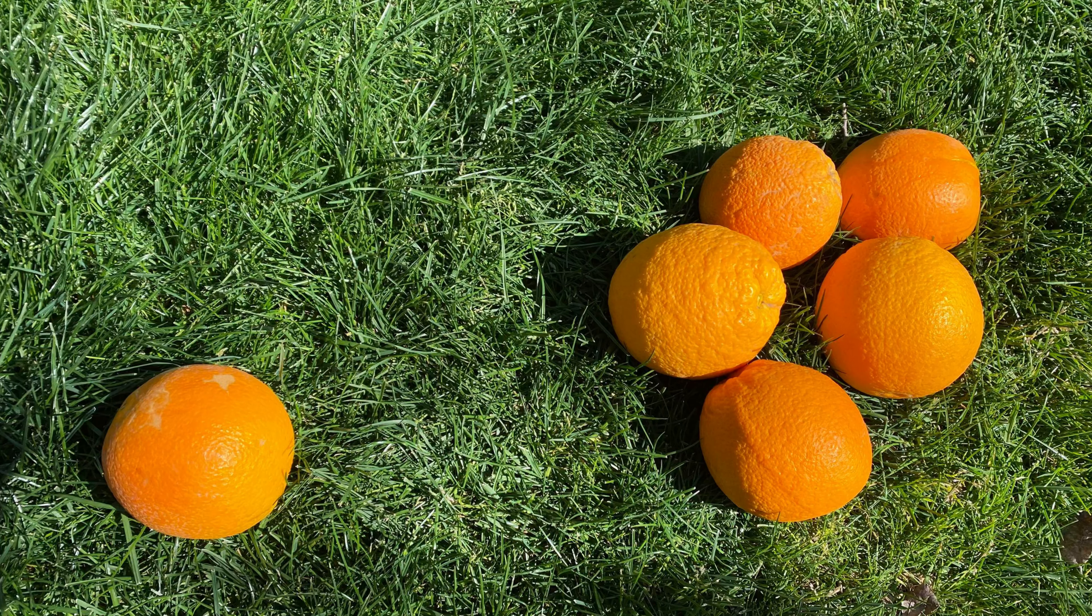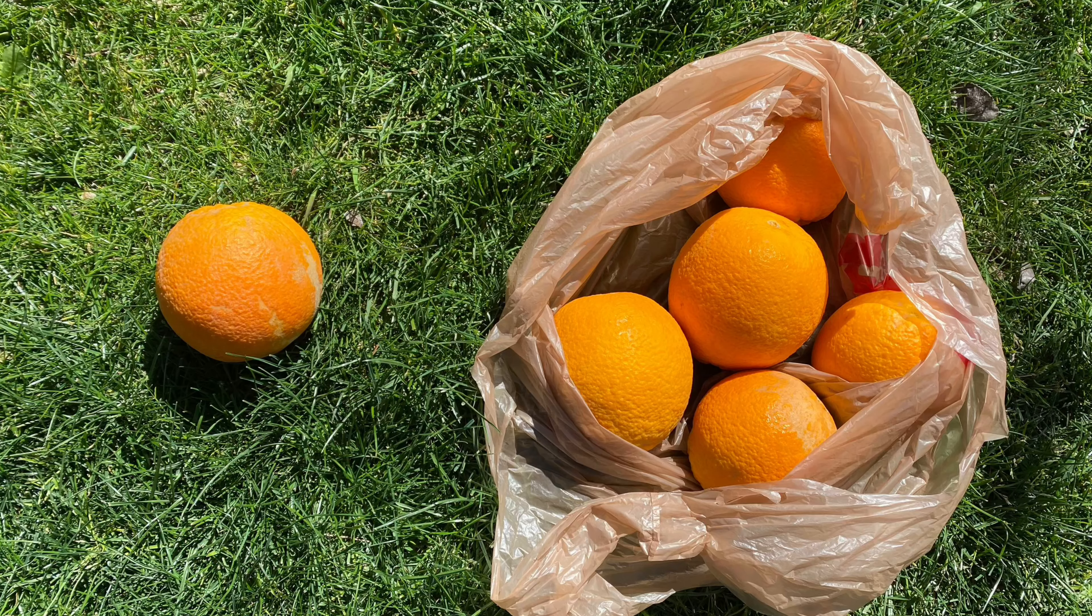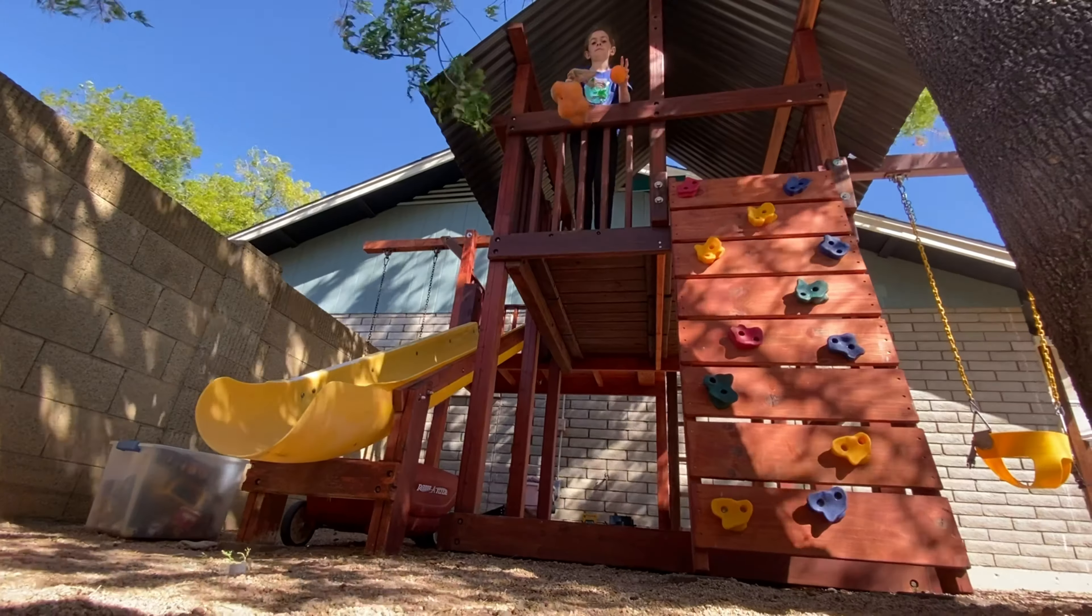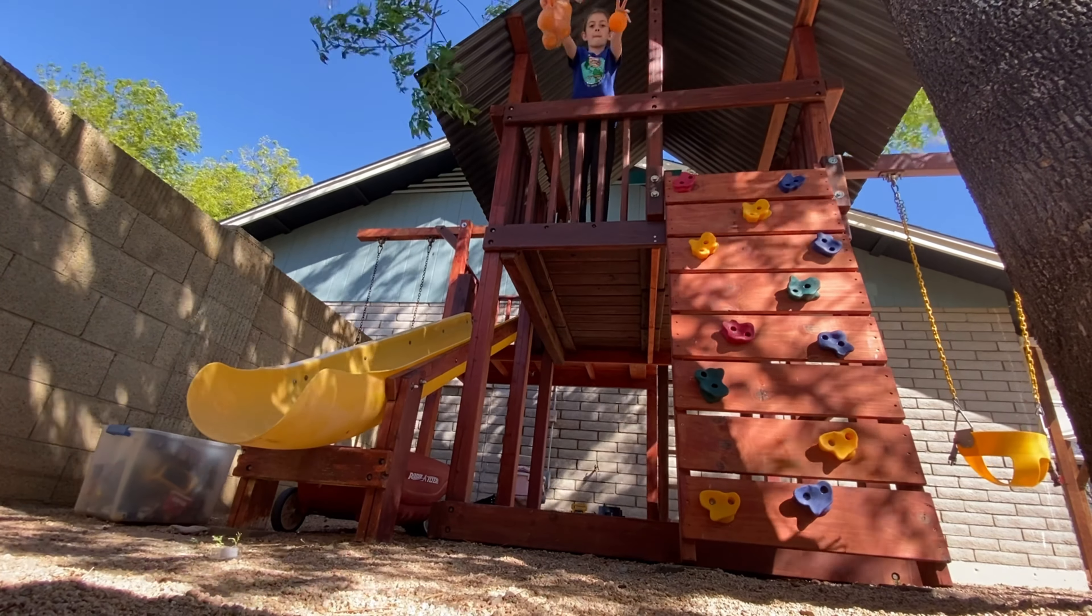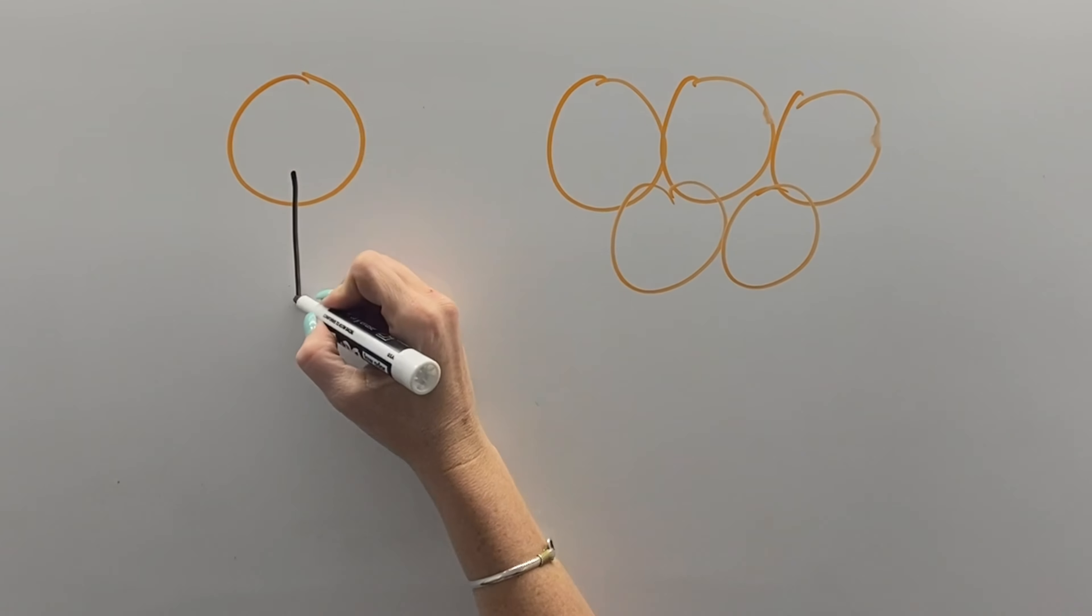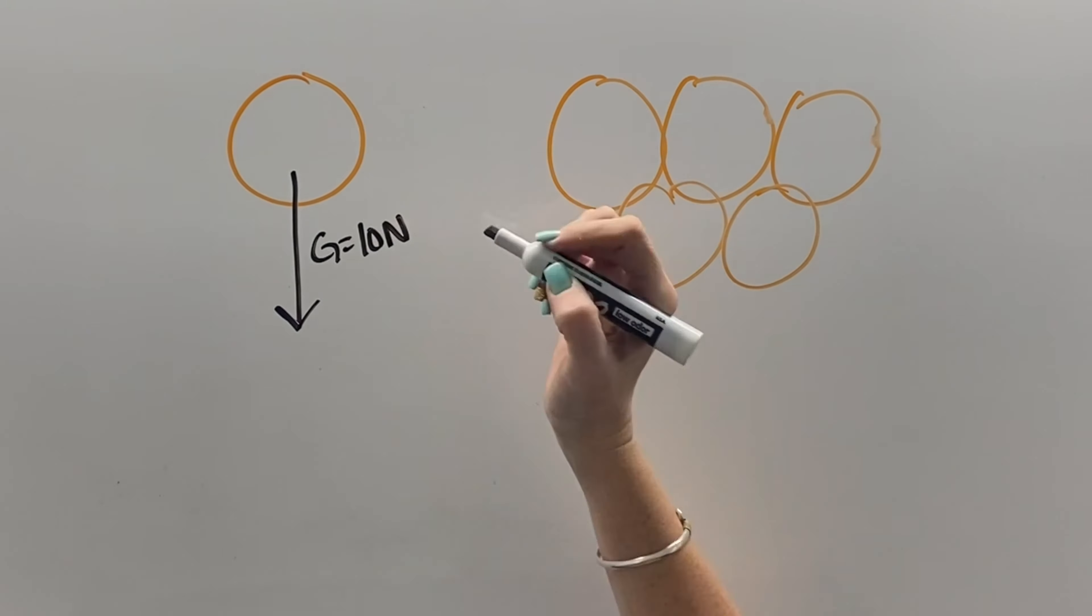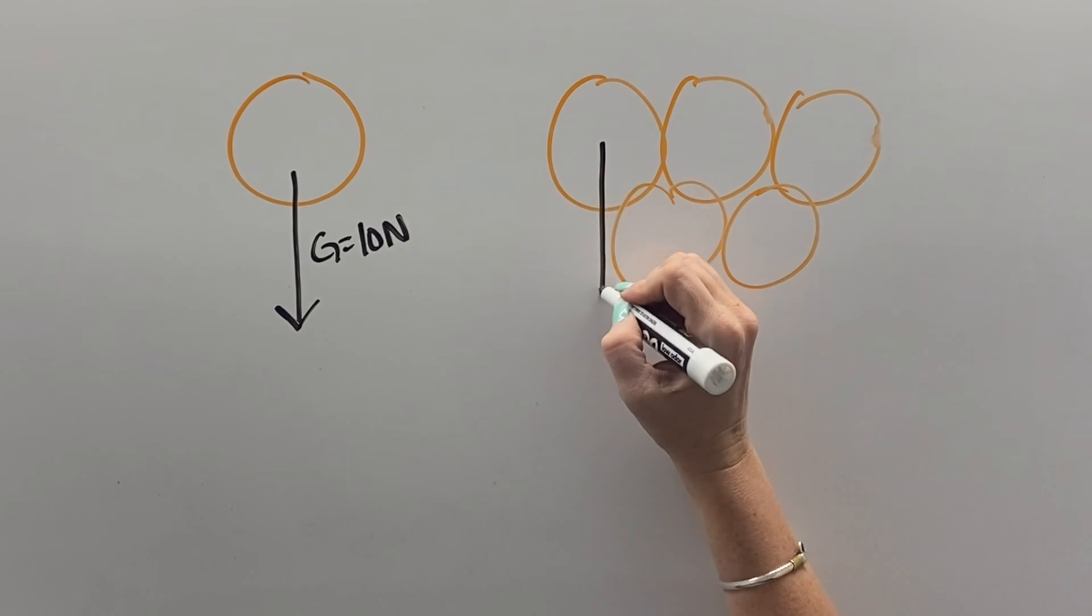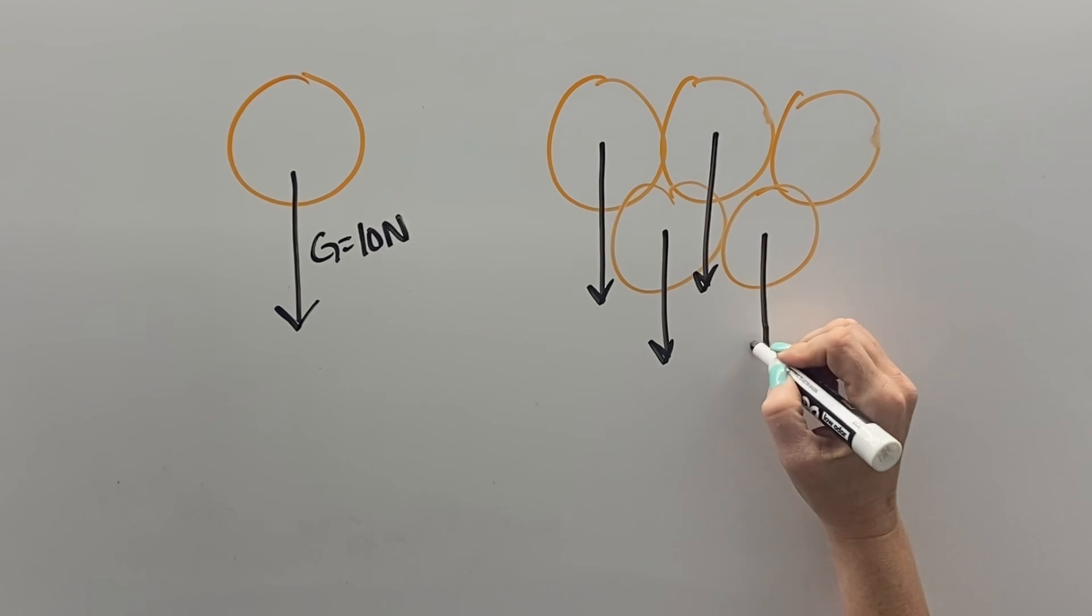What happens if we drop one orange and five oranges? Let's put the oranges in a bag and see. They hit the ground at the same time, but the bag of oranges is heavier. What's going on? Well, the gravity of the Earth is going to pull the same on every single orange.